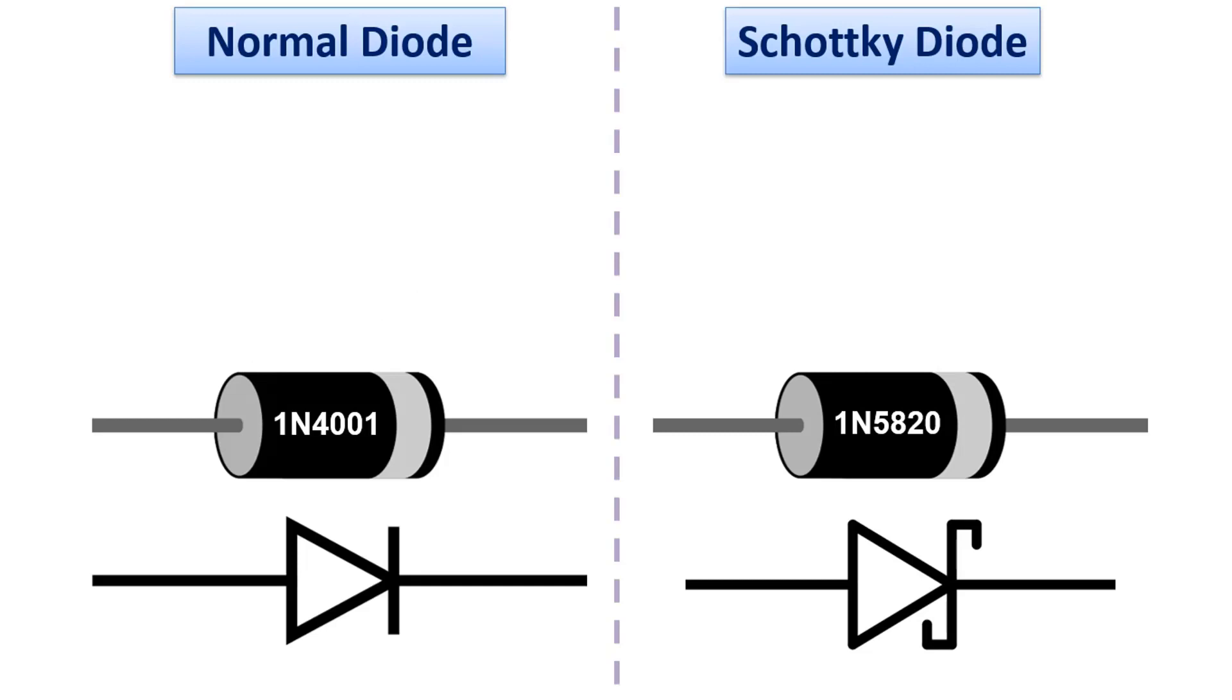Normal diodes cannot respond to voltage reversal at very high frequencies. In other words, they cannot change from a conductive state to an insulating state or from an insulating state to a conductive state. In order to respond to these rapid changes, Schottky diodes have been manufactured to be used in computers, RF and rectifier applications that need high switching speed.